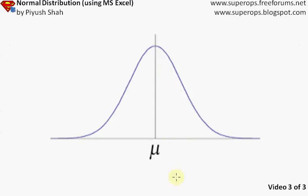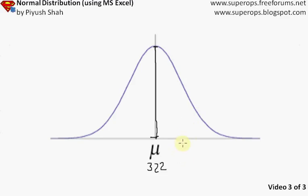The y-axis represents the probability. Suppose on average shoppers demand 322 widgets per day, so mu equals 322. The length of the vertical line from the curve down to the x-axis at 322 tells us the probability of that demand. Similarly, for 340 widgets, we drop a line from the curve to 340 — that line's length is the probability shoppers want 340 on any given day.